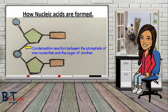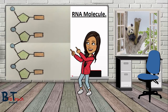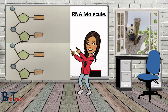Two nucleotides are linked by a condensation reaction between the phosphate of one nucleotide and the sugar of another, continuing until a chain forms. A single-stranded chain forms an RNA molecule, where the bases vary between A, U, C, or G. Although RNA is single-stranded, it is often found folded back on itself with complementary bases joined by hydrogen bonds.